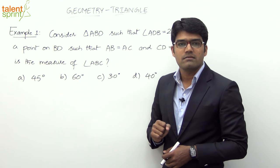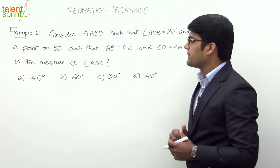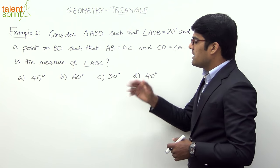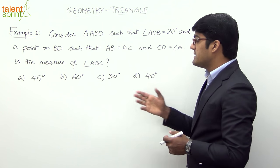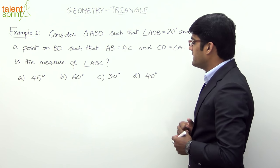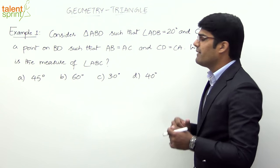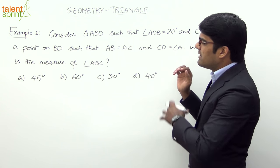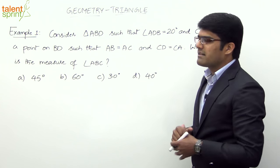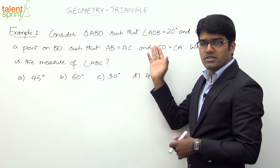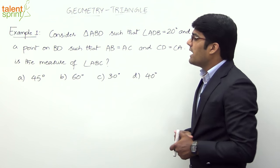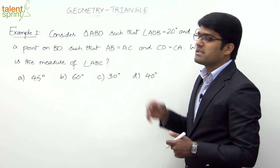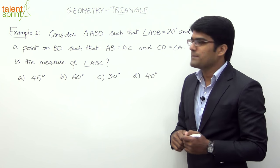The given answer options are 45 degrees, 60 degrees, 30 degrees, and 40 degrees. Let us try to consider a triangle based on the given properties and see what is the measure of angle B.